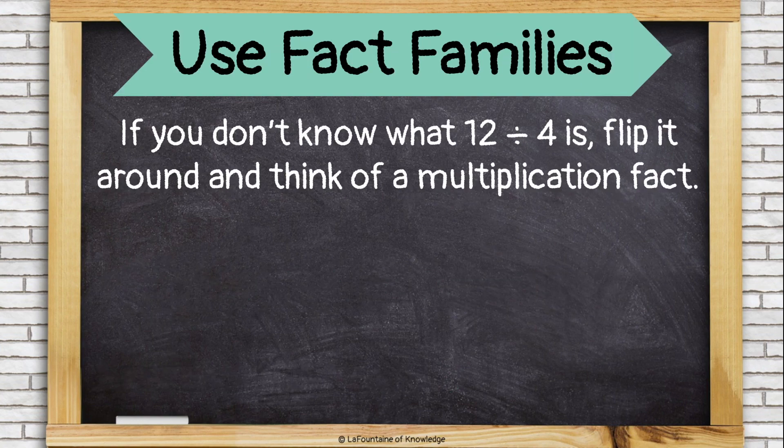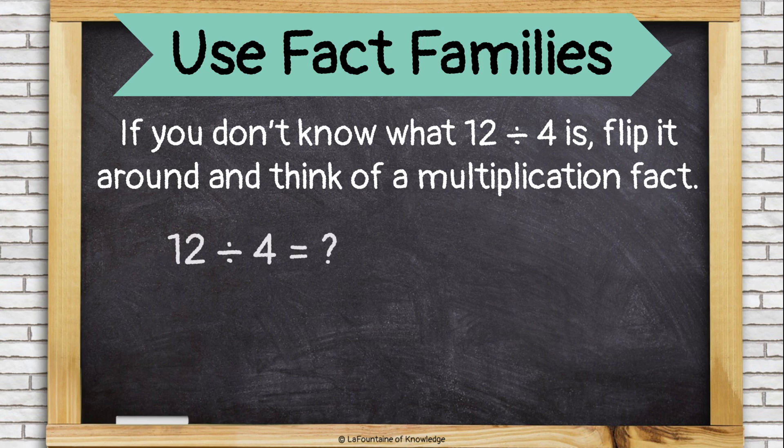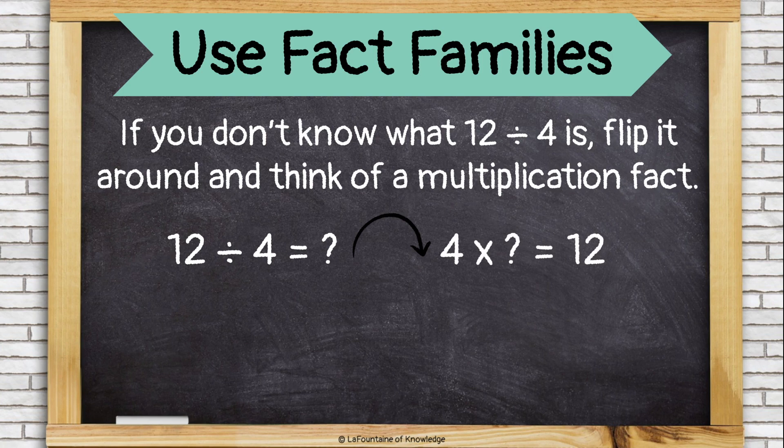Now let's talk about fact families. If you don't know what twelve divided by four is, you can flip it around and think of a multiplication fact. Instead of thinking about it like division, twelve divided by four, think about it like multiplication with a missing factor. Four times what equals twelve.